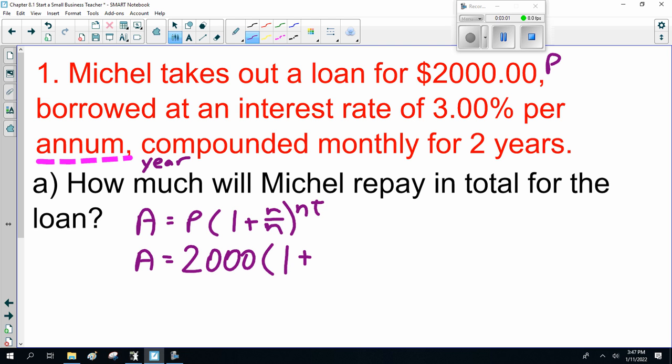The rate is 3%. One trick here: 3%, that's 3 out of 100, or 0.03. Next trick, it's compounded monthly. That means every month we pay a compounding period. How many months in a year? 12. So N is 12, and 12 times how many years? 2 years. Time is 2.